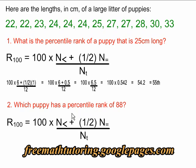With any formula, you could be asked as many different types of question as there are variables. This formula has four variables. So you should be able to be asked for the percentile rank or the N less than or the N equals or the N total.